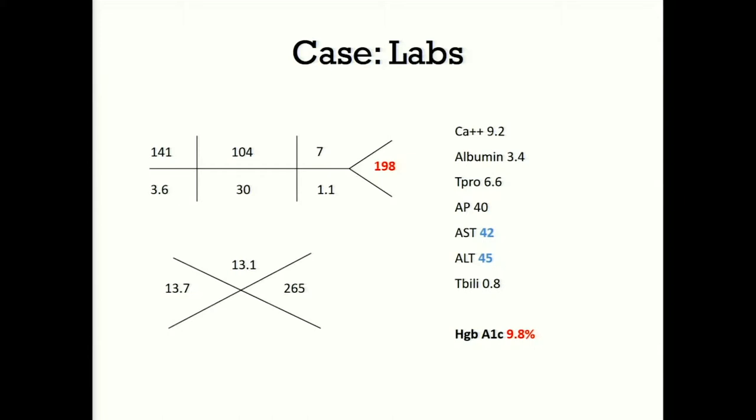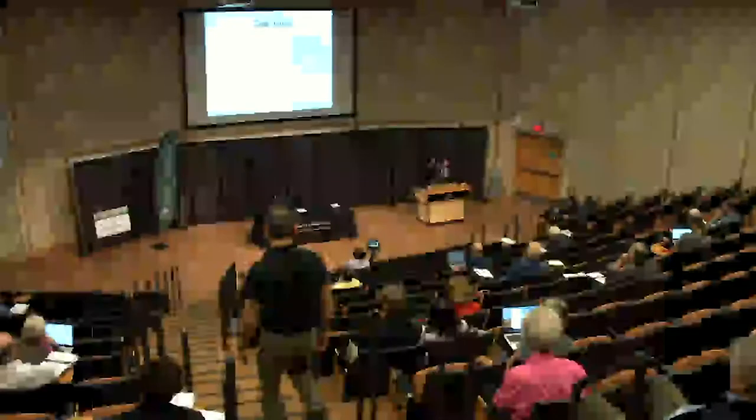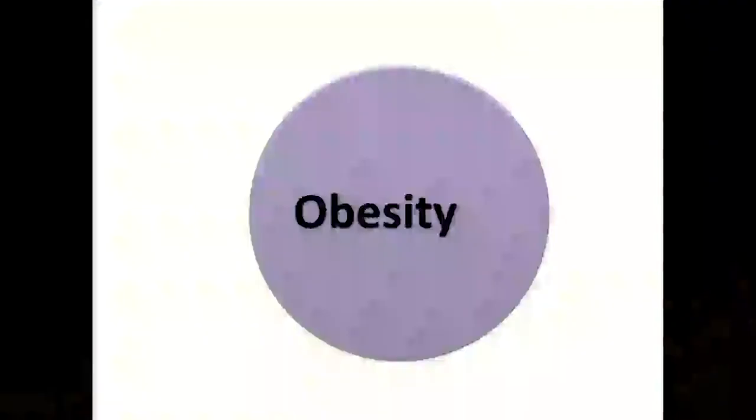Looking at his labs, there's a little elevation in AST and ALT. His hemoglobin A1C is 9.8, and otherwise fairly unremarkable. I'd venture to guess many of you have seen this patient before in your clinic.